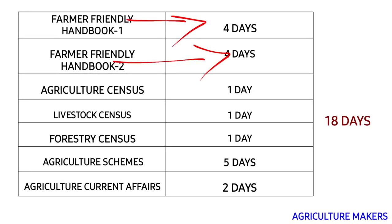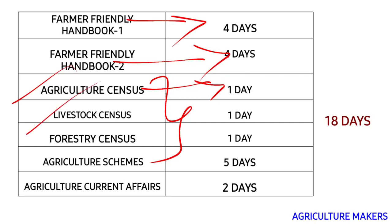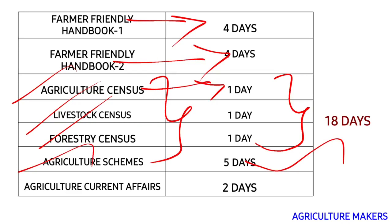Coming to census-related things, I have generously provided one day for each census so you can be very thorough and won't need to read it repeatedly during your examination. I have covered agriculture census, livestock census, and forestry census — one day each. Coming to agriculture-related schemes, I have provided five days to cover all agriculture schemes and livestock-related schemes, and you must revise them.